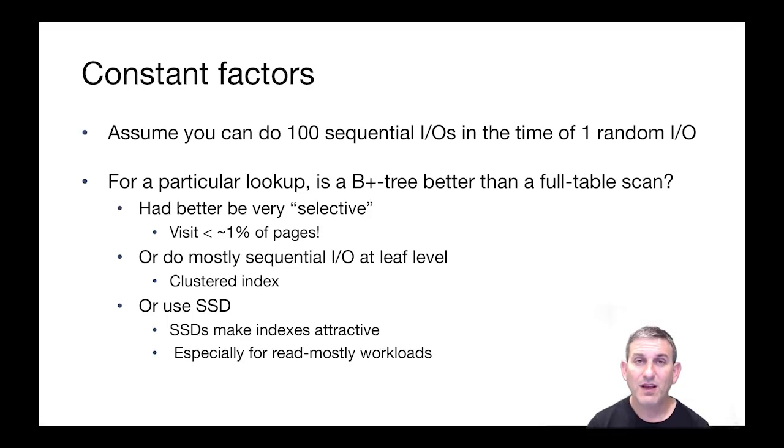Let's look at an example. Assume that you can do 100 sequential IOs in the time of one random IO. B+ trees in general are going to cost a lot of sequential IOs, so it could be pretty risky. For a particular lookup, is a B+ tree better than a full table scan of a heap file? Well, that B+ tree had better be very selective in the pages that it looks at. You'd better visit less than 1% of the pages to make up for that 100x cost for a random IO.